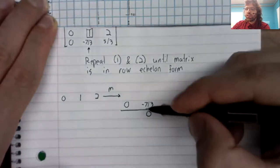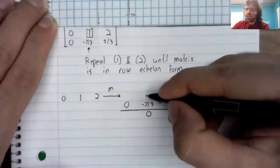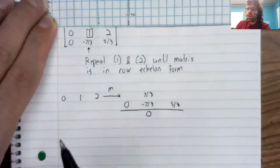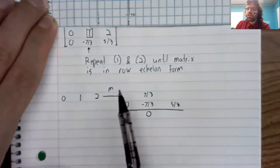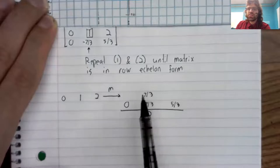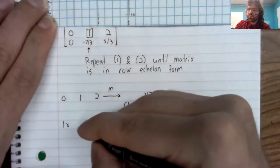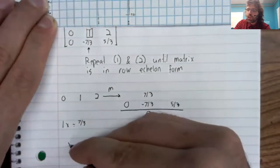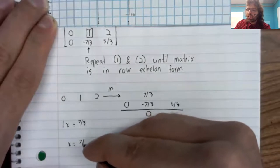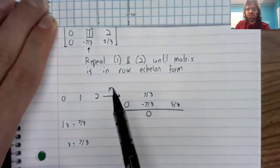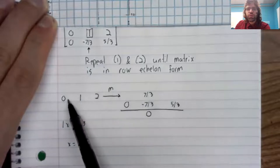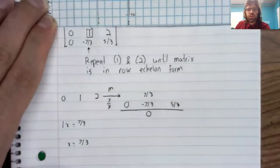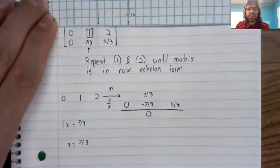And we're going to do it in such a way that this second entry turns to zero. So for this addition to be zero, we need a seven thirds up here. One times what is seven thirds? Seven thirds. That's an easy one. One times seven thirds is seven thirds. So we're going to take this row and multiply it by seven thirds.